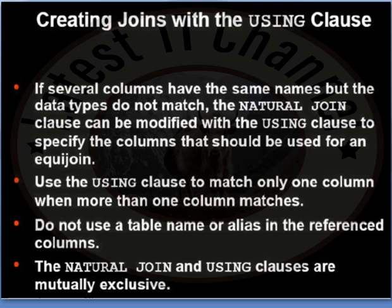First of all, you have to be careful about these things. If several columns have the same name but the data types do not match, the natural join clause can be modified with the USING clause to specify the column that should be used for the equation. Use the USING clause to match only one column when more than one column matches.